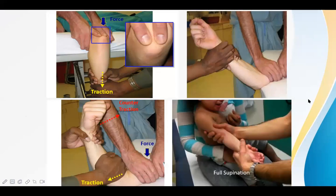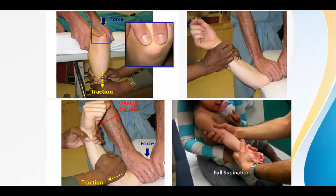The key for clinicians is to diagnose elbow dislocation promptly, examine the patient thoroughly for neurovascular status, and quickly refer to an orthopedic surgeon. Pictures showing reduction techniques are provided but the detailed procedure is learned progressively when working in orthopedic settings.